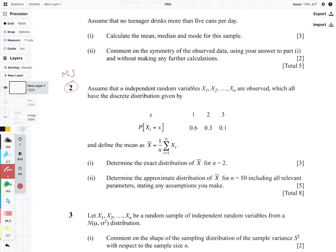Hi everyone, it's MJ and in this video we're going to be looking at question 2 from the September 2017 paper. This is quite a tricky question, so we're going to go through it slowly. The question says assume that n independent random variables, x1 to xn, are observed, which all have the discrete distribution given by the following.